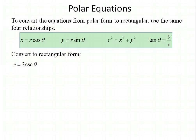Now we want to work the other way: converting an equation from polar form to rectangular form, using the same four relationships. Starting with r equals 3 cosecant theta, the first thing is to convert cosecant to sine — it's the reciprocal, so you get 3 over sine theta. Then bring sine theta to the other side to get r sine theta equals 3, and by substitution replace r sine theta with y, giving y equals 3 in rectangular form.